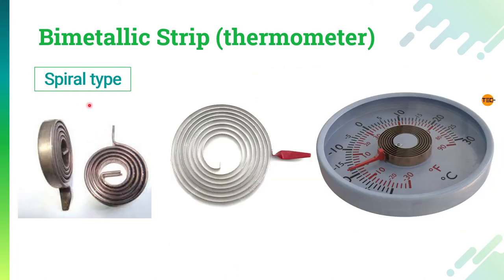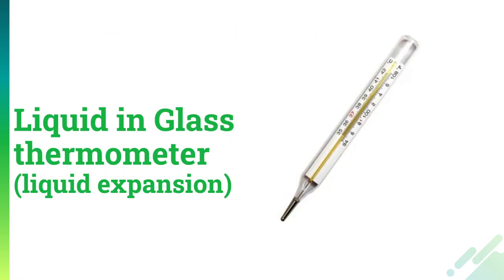The last category is the spiral type. The working principle is almost the same as the helical one, but the shape is spiral. The first end of the spiral strip is fixed, and the second end is connected to an indicator. Whenever the temperature changes, the expansion of the bimetallic strip moves the indicator, which is calibrated to show temperature directly. This is how the spiral type bimetallic strip works.